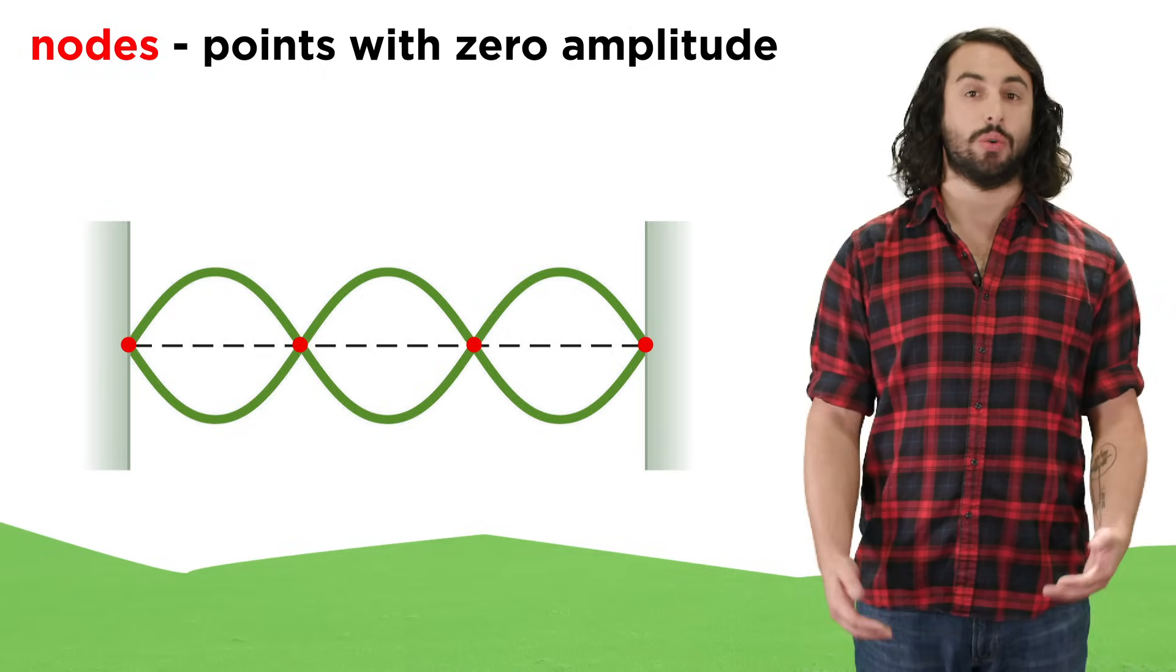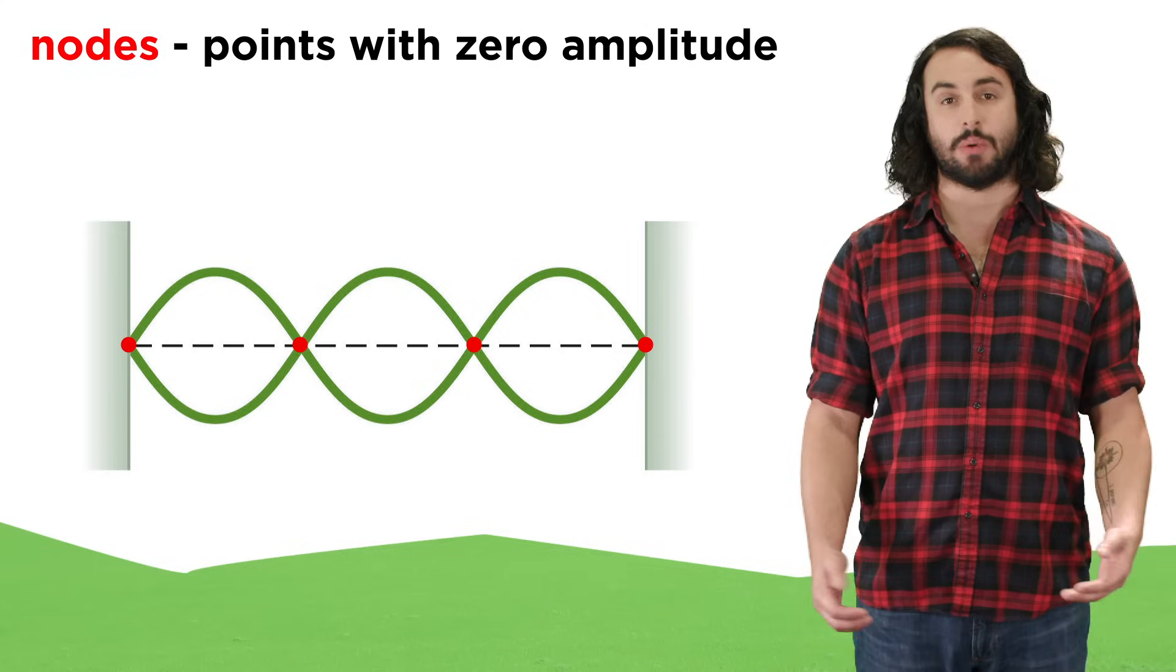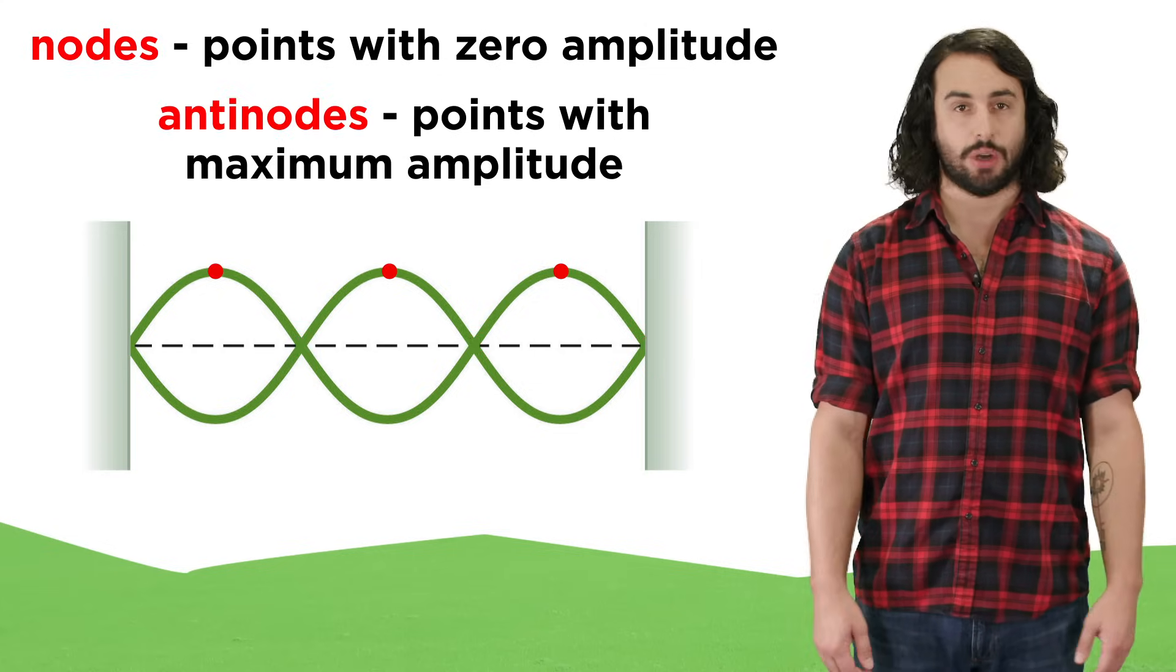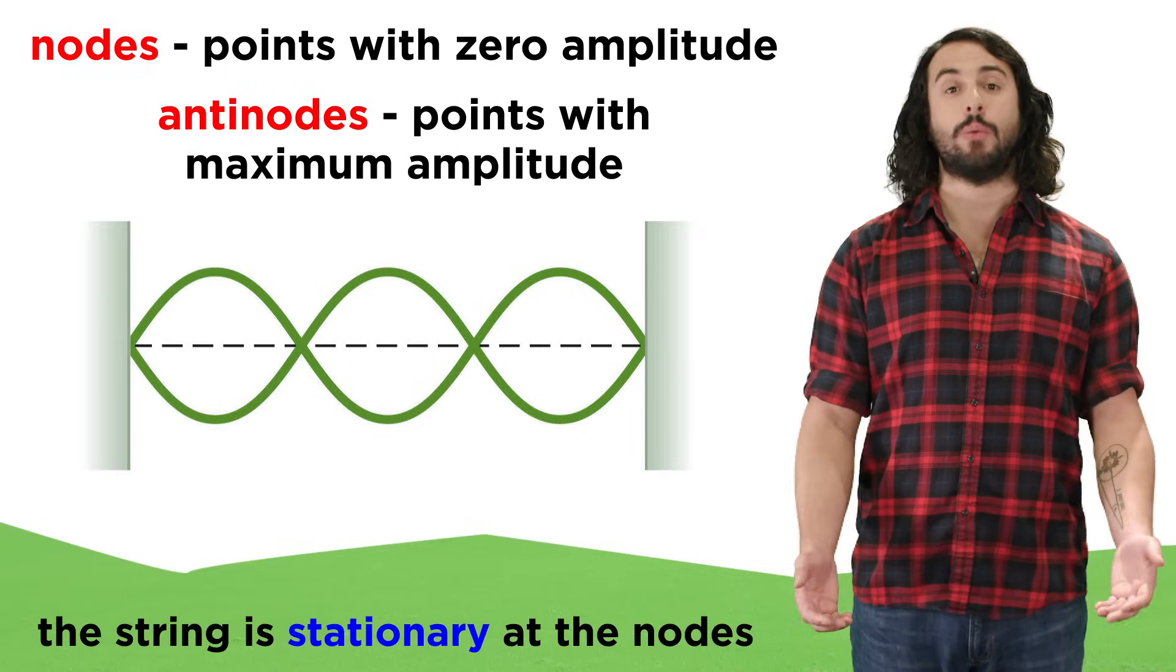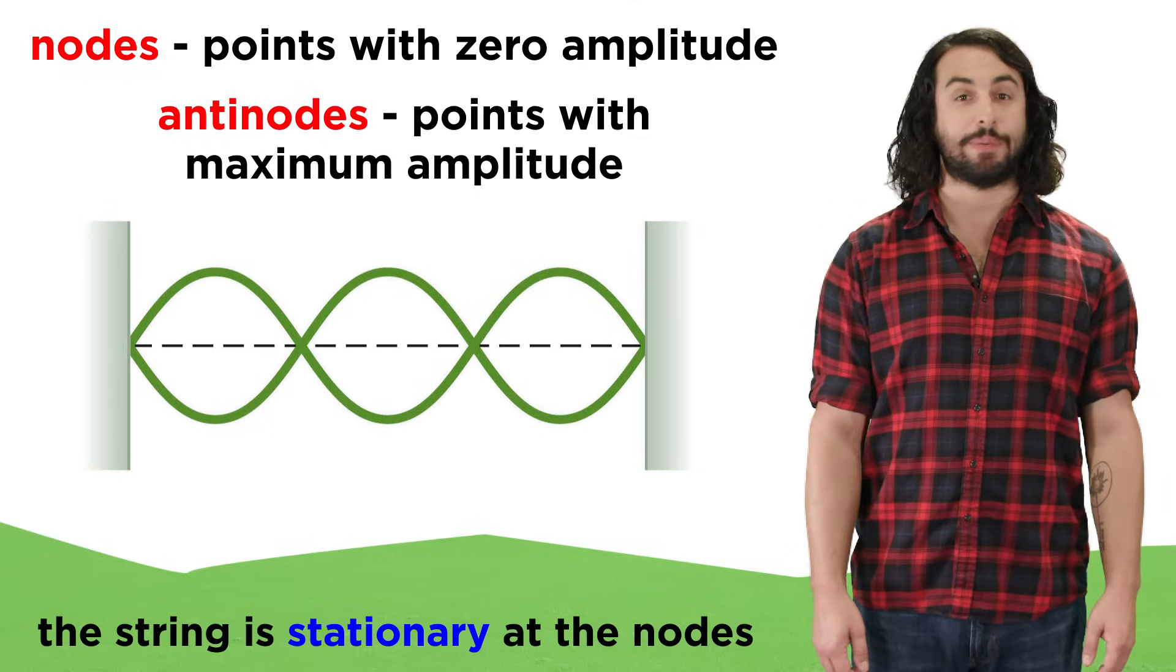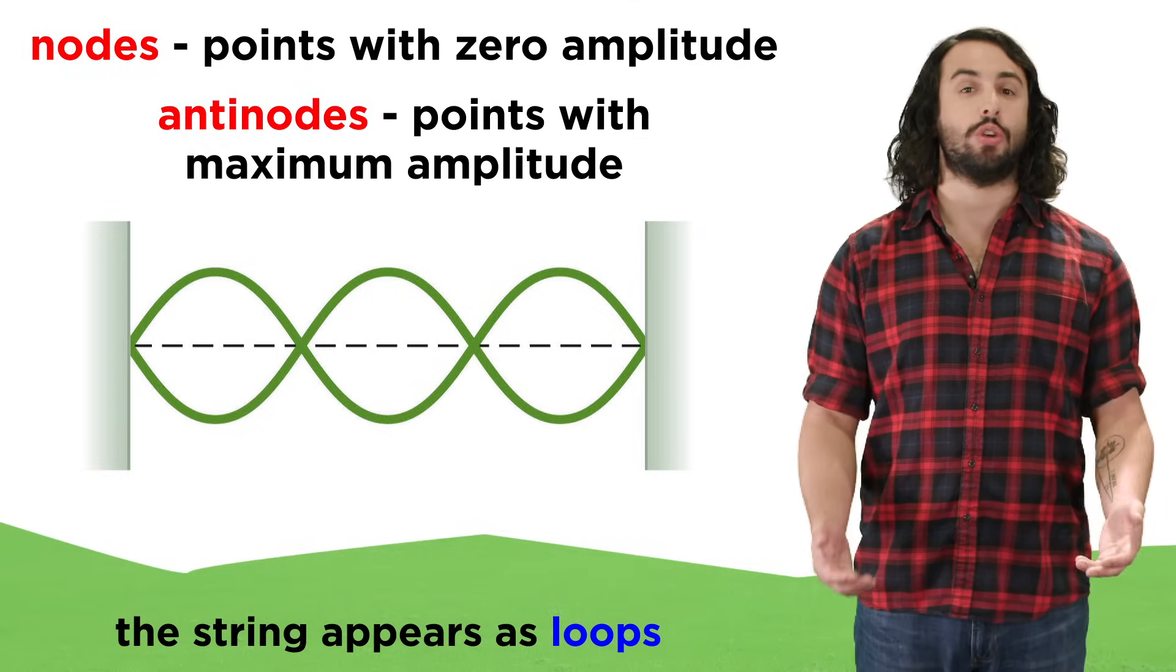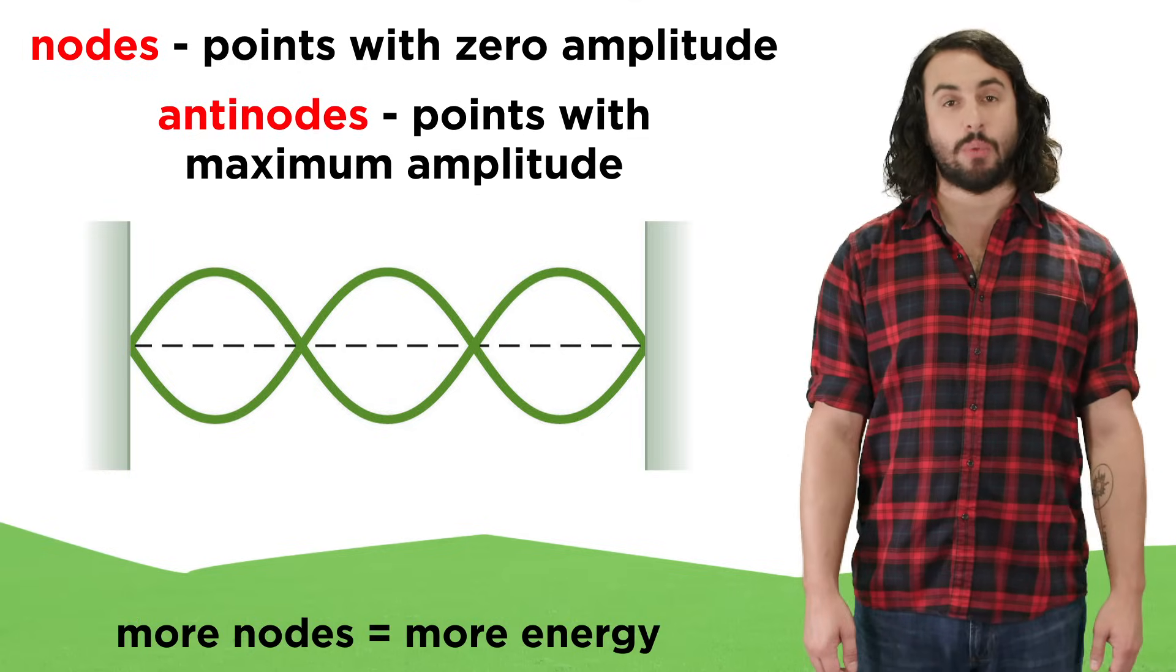Standing waves contain nodes, where there is destructive interference and an amplitude of zero, as well as anti-nodes, where the amplitude is at a maximum. The string will be completely stationary at the nodes, and the other sections, if vibrating rapidly enough, will appear to the human eye to create loops, and more nodes means more energy.